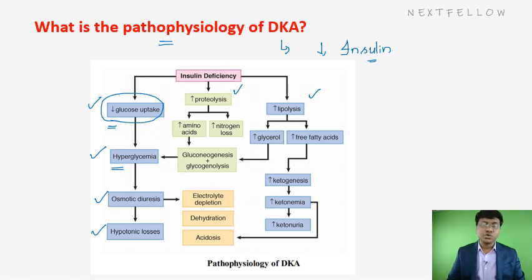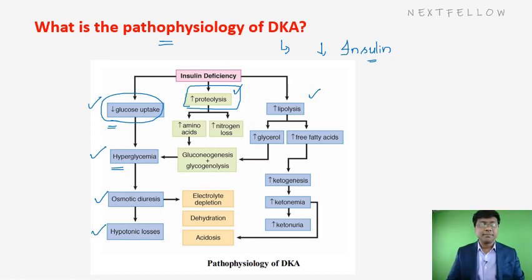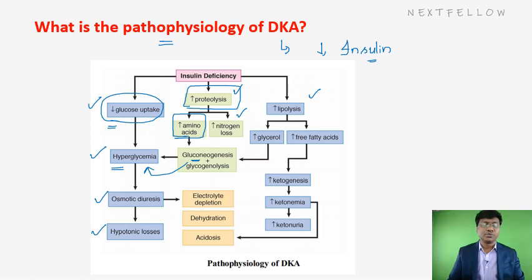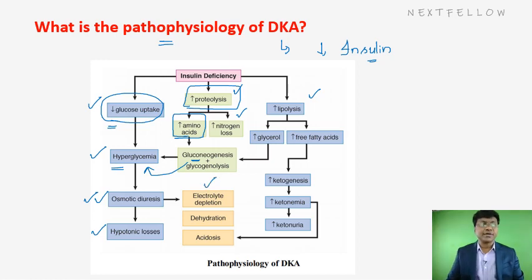Due to osmotic diuresis, glucose along with water is excreted in urine, causing hypotonic losses. Through proteolysis, amino acids are formed along with nitrogen loss. These amino acids undergo gluconeogenesis, converting back to glucose and further precipitating hyperglycemia. Osmotic diuresis also causes electrolyte depletion and dehydration.